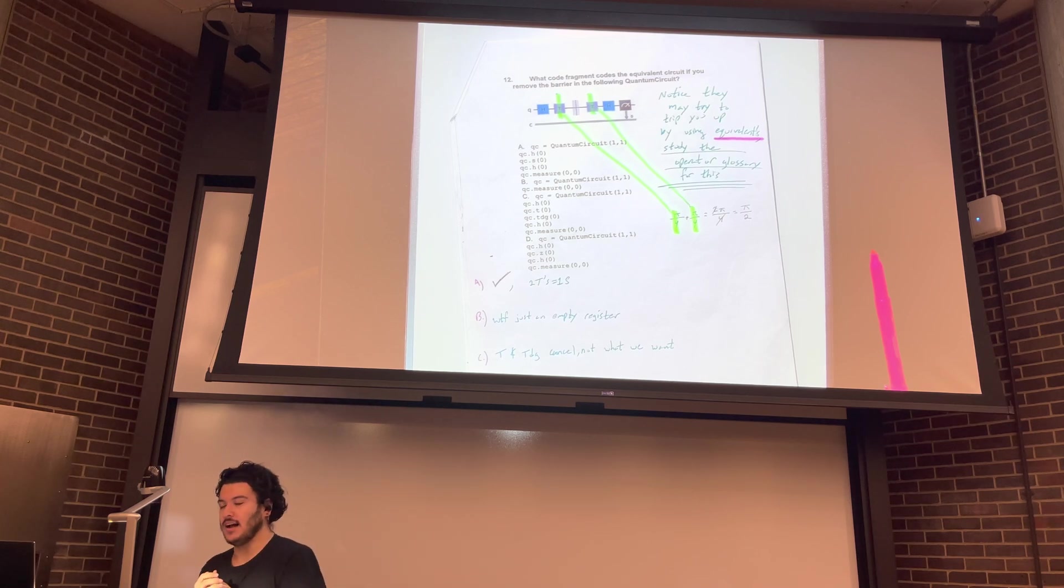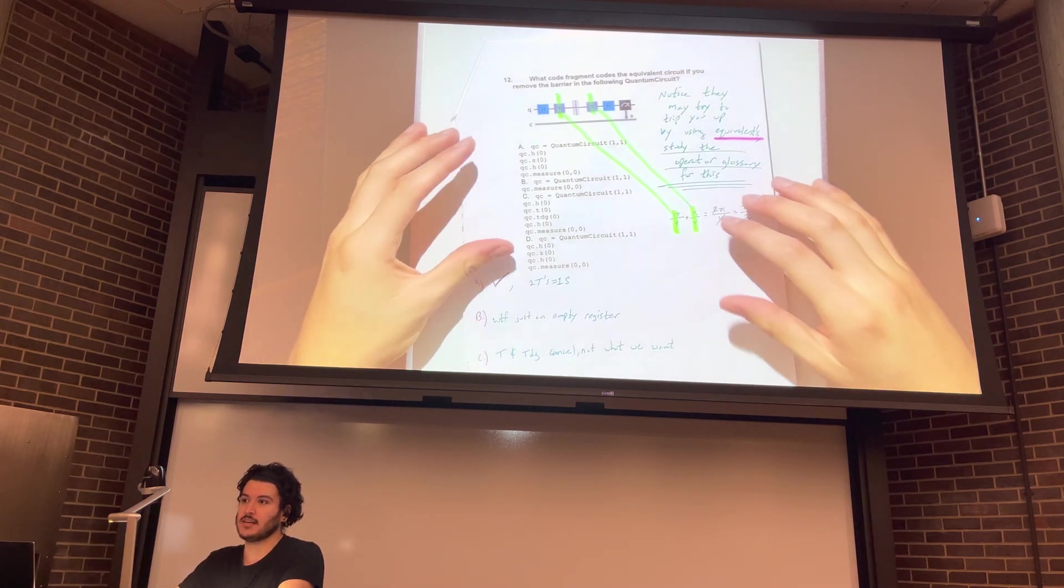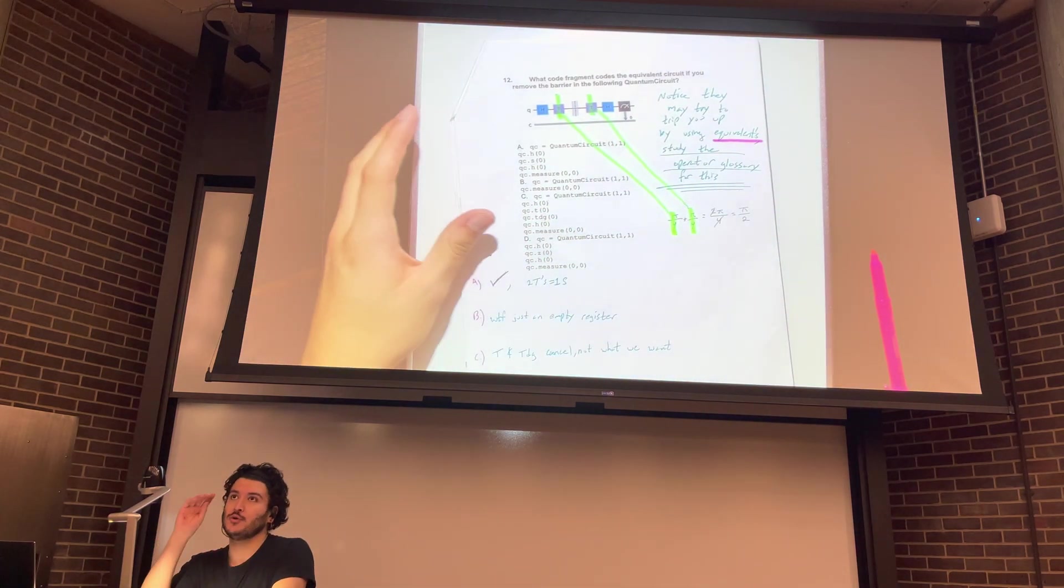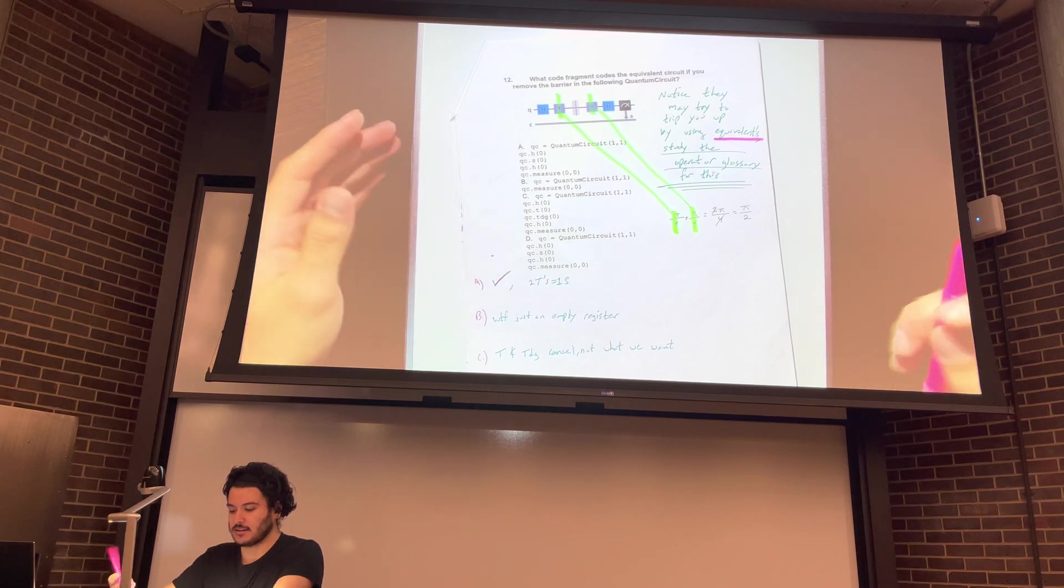So what I'm guessing happens, what I actually think happens in this circuit is, these end up canceling out, or simplifying rather, to an S gate. So let's see how this factors in.